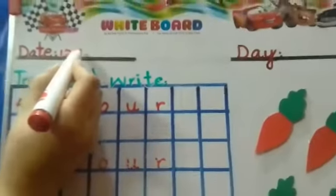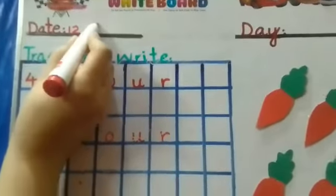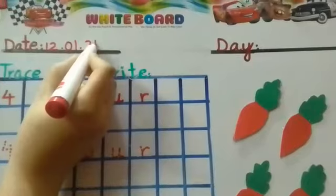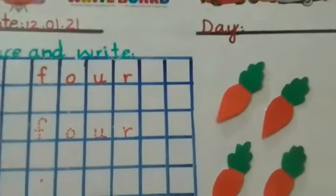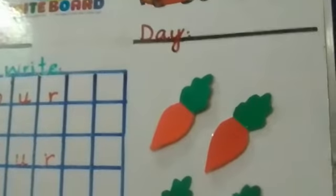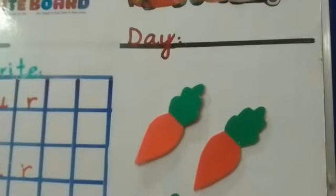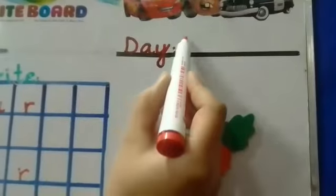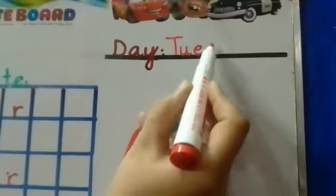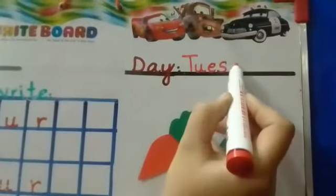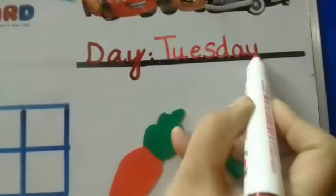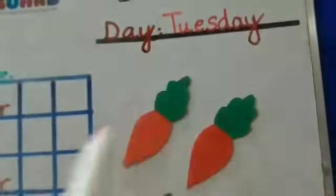The date is 12.01.2021. And who can tell me what day is today? Today is Tuesday. And what are the spellings of Tuesday? Capital T-U-E-S-D-A-Y, Tuesday. Today is Tuesday.